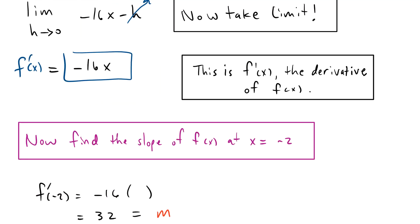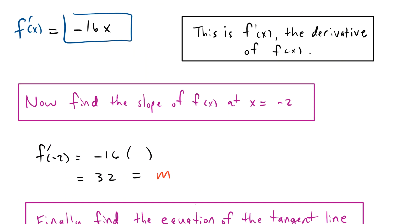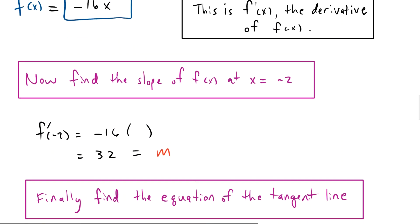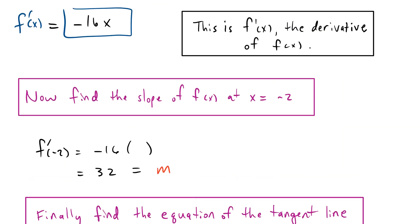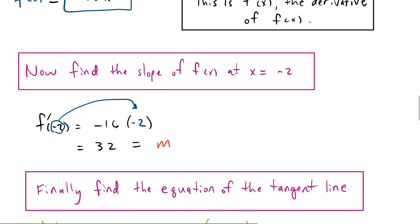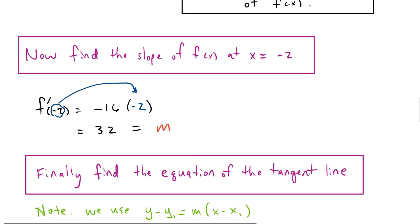That's exactly what we want because we want to find the slope at x equals negative 2. So if we take our negative 16x and we plug in negative 2, negative 16 times negative 2 gives us 32. And this is our slope. Not everywhere. This is the slope just at x equals negative 2 of the parabola that was opening down that we were looking at.